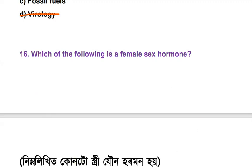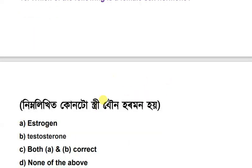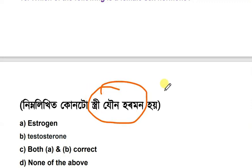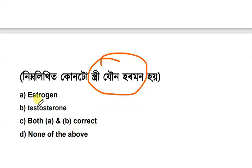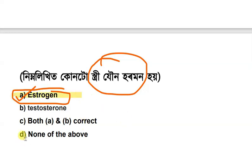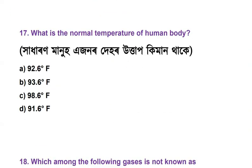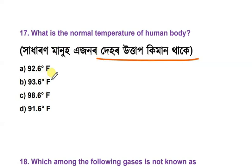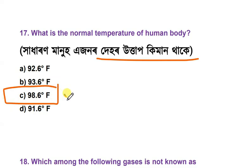Which of the following is a female sex hormone? Next question: What is the normal temperature of the human body? The options are 92.6°F, 93.6°F, 98.6°F, and 91.6°F. The correct answer is 98.6 degrees Fahrenheit.